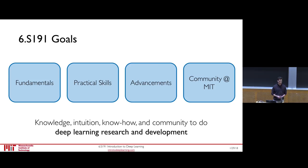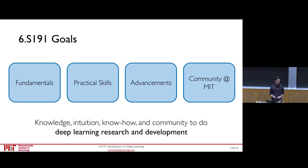We'll provide you with practical skills to implement these algorithms and deploy them on your own machines. We'll also talk about state-of-the-art and cutting-edge research happening in deep learning in industry and academia. The main purpose of this course is to build a community here at MIT devoted to advancing the state of artificial intelligence. We'll also cover some of the limitations of these algorithms, which we need to be mindful of as a community to create more intelligent systems.